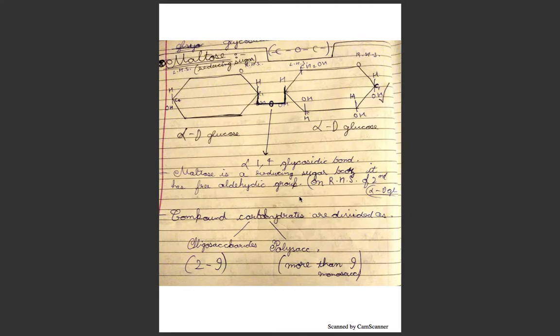Maltose is a reducing sugar because it has a free aldehyde group on the right-hand side. You can see the free OH. It has the reducing iron of OH, which is why it is classified as a reducing sugar.